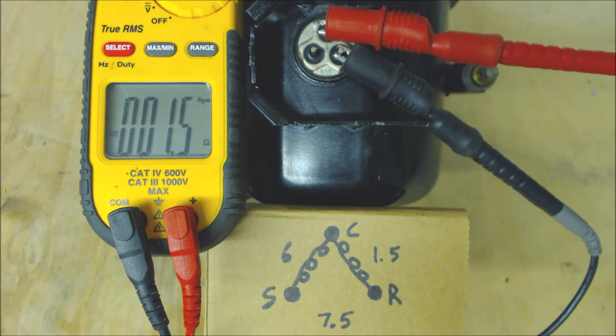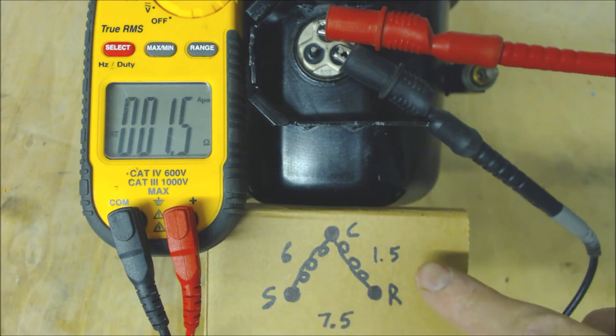So you see we're reading 1.5 ohms of resistance. We have our terminals marked out right here, we're reading 1.5 right now.